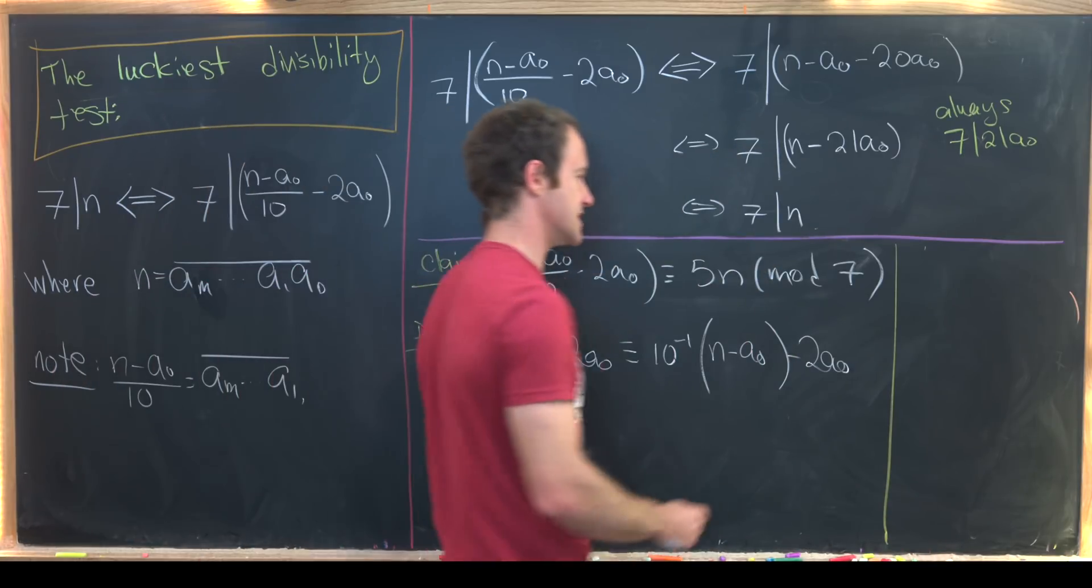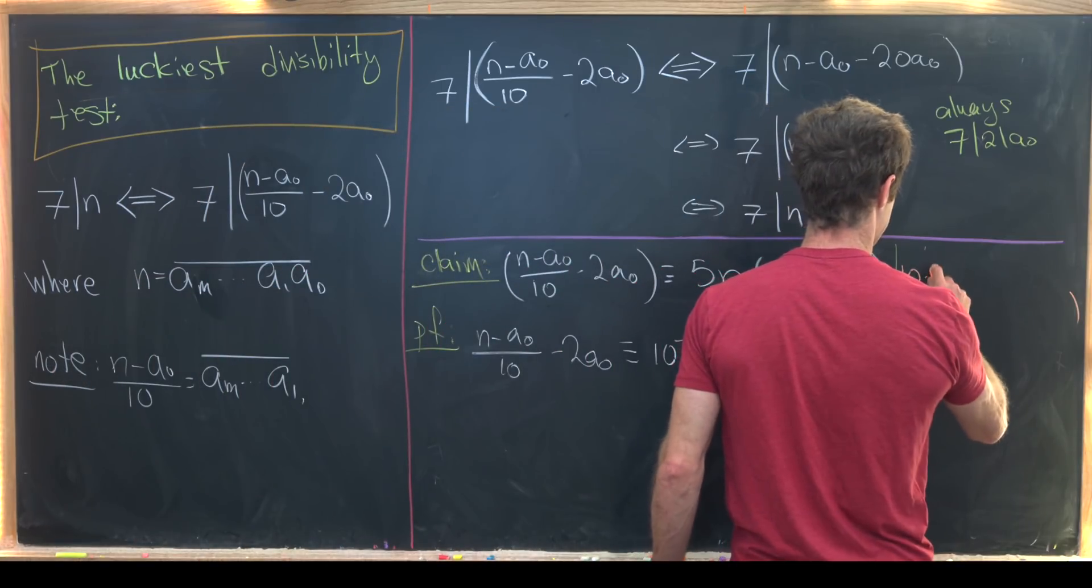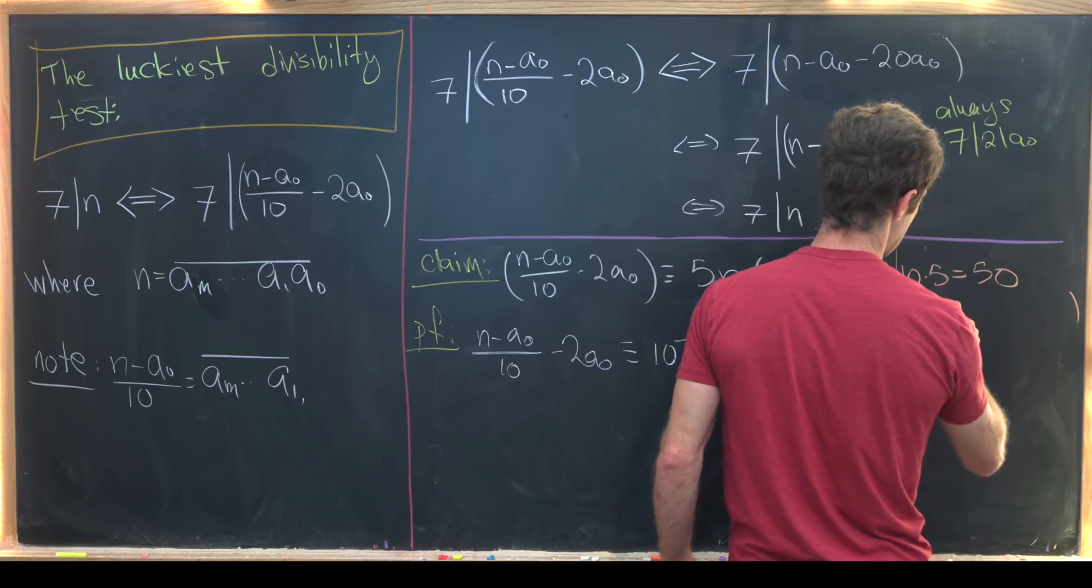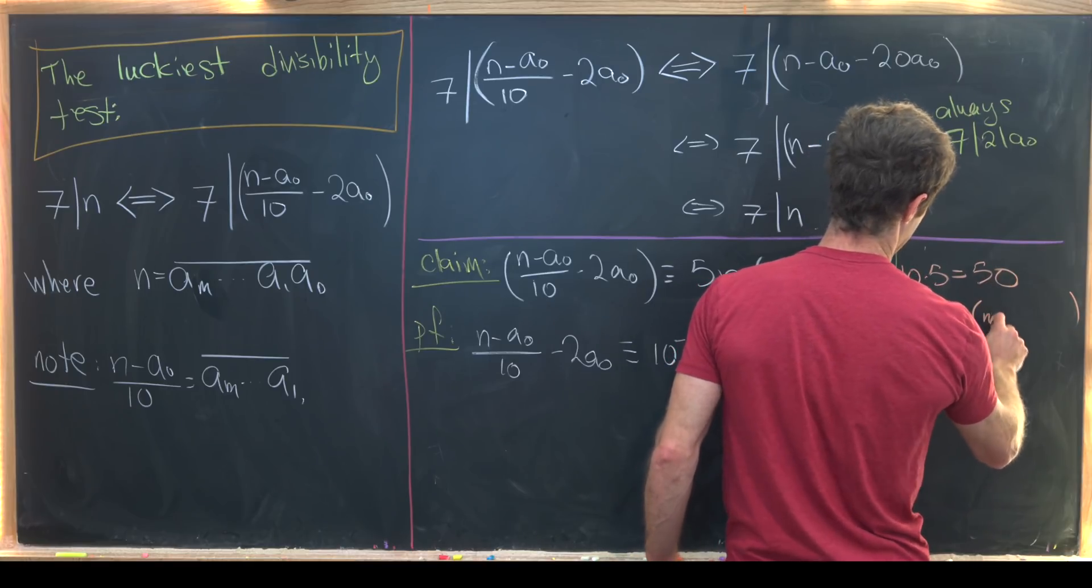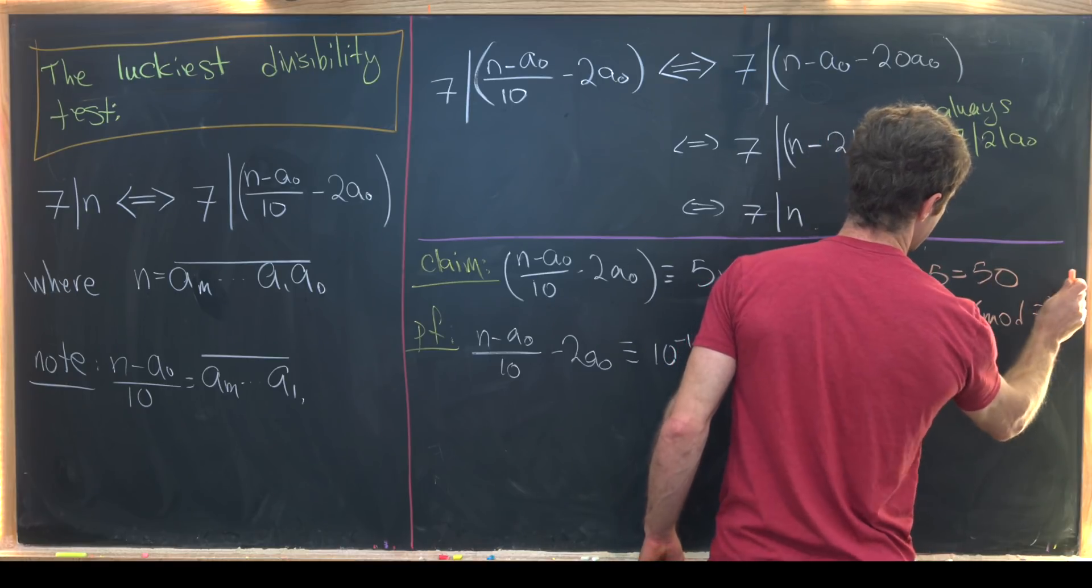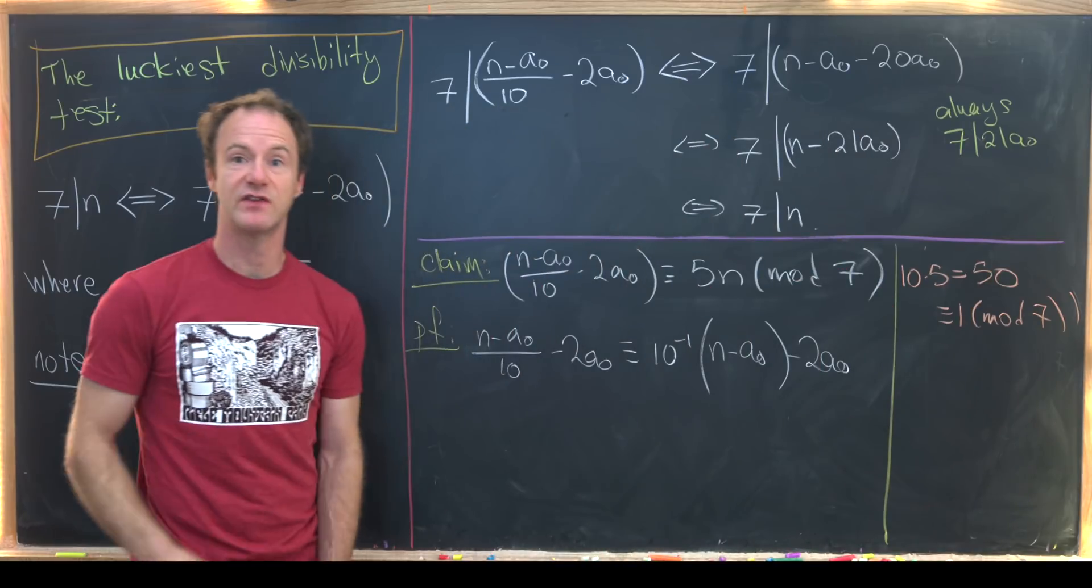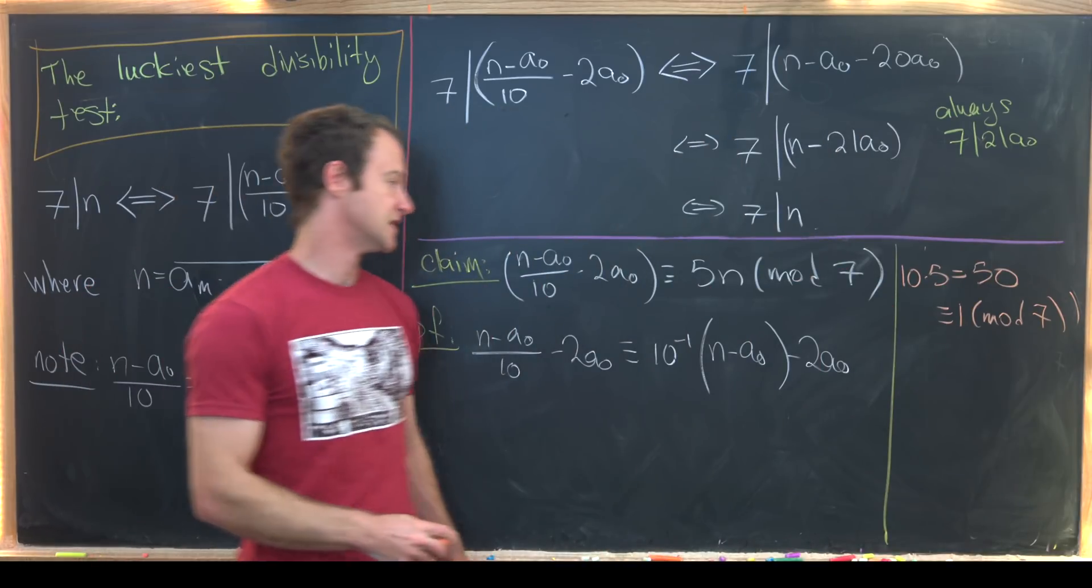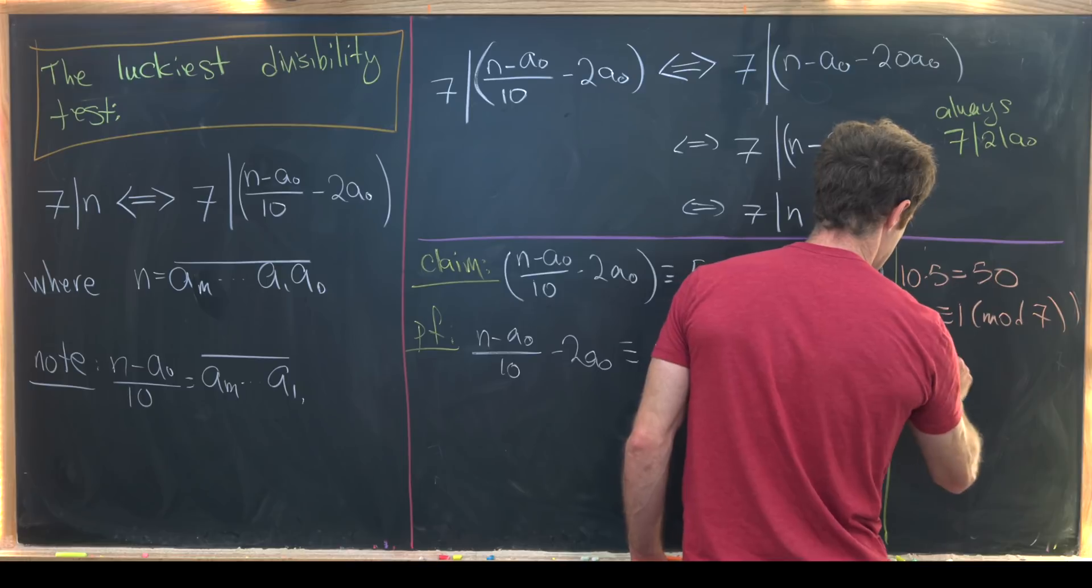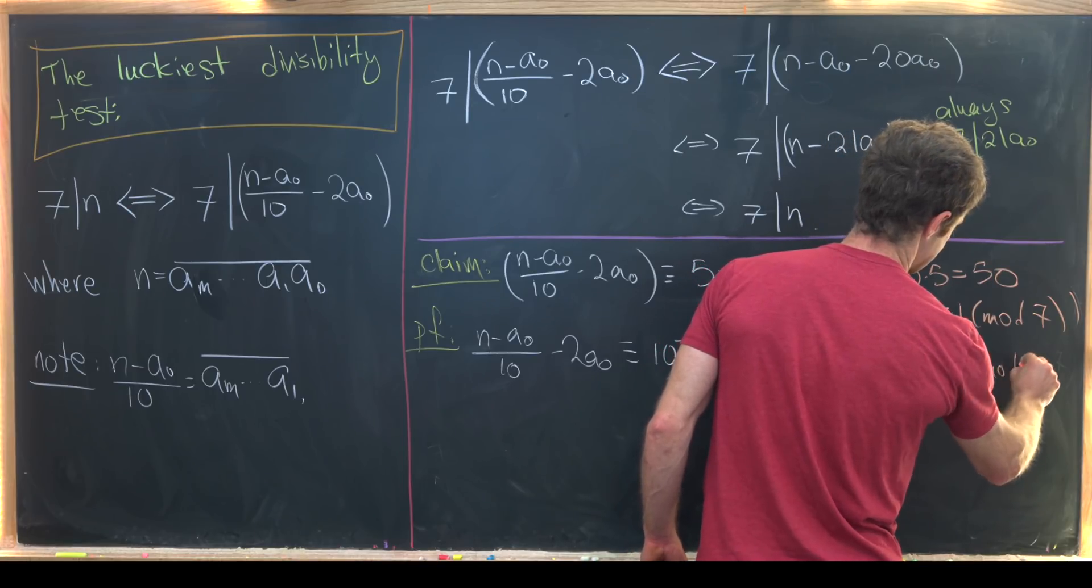Well let's notice that 10 times 5 is equal to 50 which is congruent to 1 mod 7. Because it's one more than a multiple of 7 it's one more than 49.